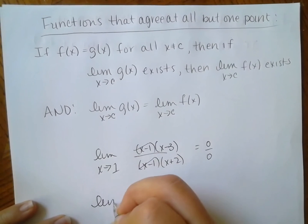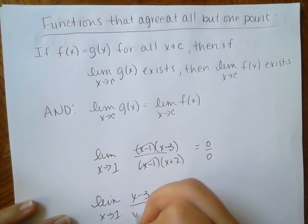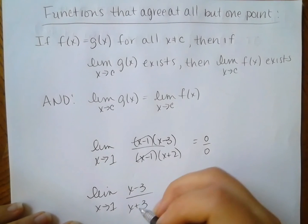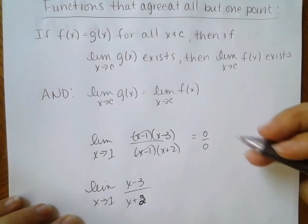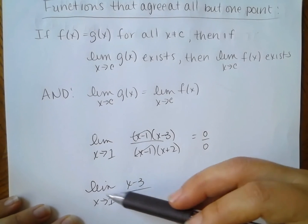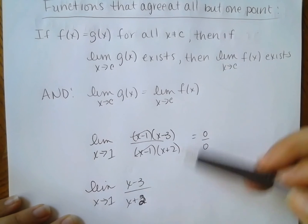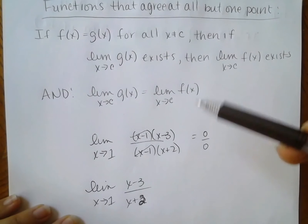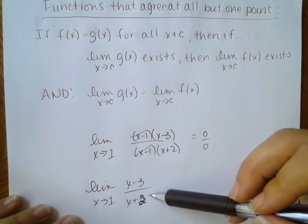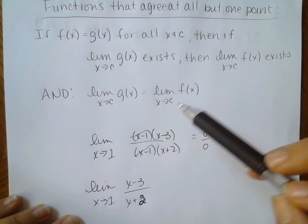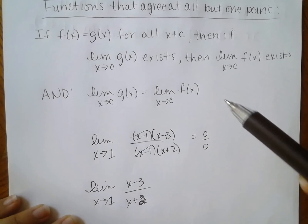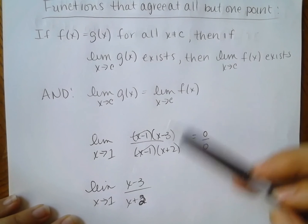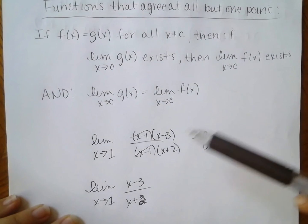If I look at the simplified function and the original function on their own, the two graphs would be indistinguishable except right around x equals 1, where the original has an undefined spot. But other than that, the two graphs are identical. There's a little hole right at that one point — these are two functions that agree everywhere except at c, exactly the same except right there at 1.